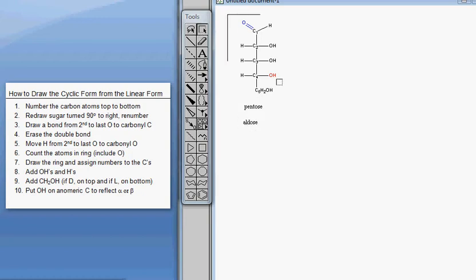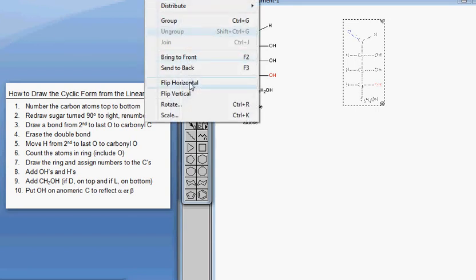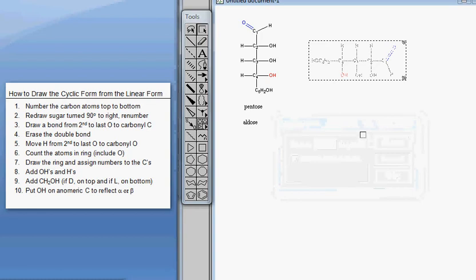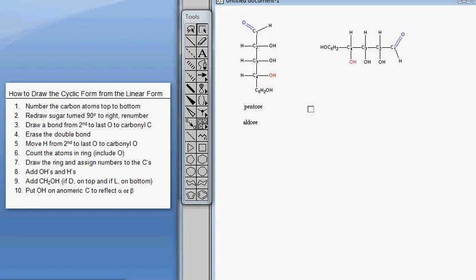Step two, I'm going to redraw. So just like before, I'm going to copy and paste and rotate 90 degrees to the right. Okay, you will have to re-number. My numbers just stayed with my drawing.